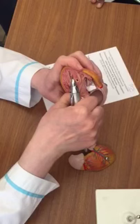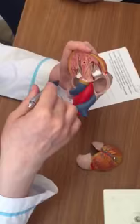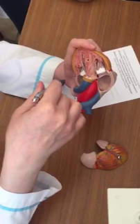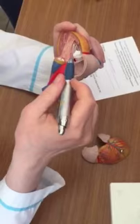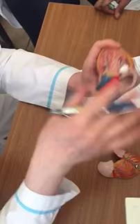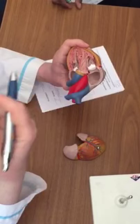During intrauterine period we have the mixing between the blood into the right and left atrium by means of foramen ovale. After birth it must be closed during three months. And blood doesn't mix here because the body begins to respire.